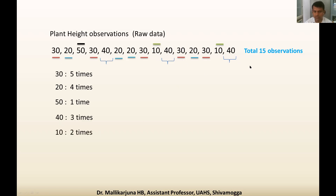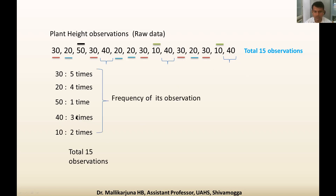Observation 40 is repeated three times, and number 10 is repeated only two times. So all the observations are exhausted. We have counted: five times, four times, one time, three times, two times — total 15 observations. This matches 5 plus 4 plus 1 plus 3 plus 2 equals 15.